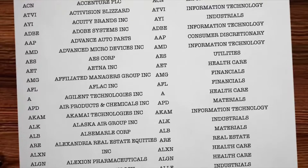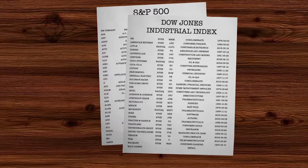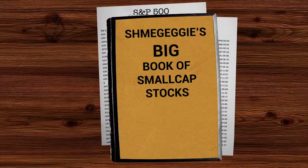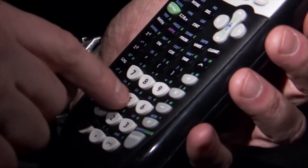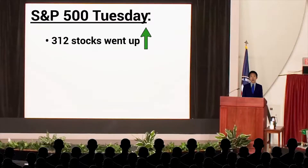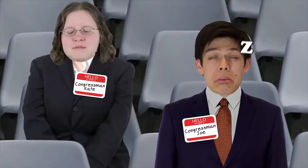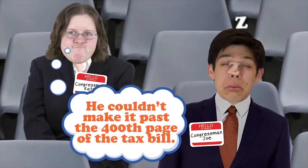Basically it looks at a given index, like the 500 stocks of the cleverly named S&P 500, or the 30 stocks of the Dow, or the 1,200-ish stocks of the Schmageggy Small Cap Index. It then just adds up which stocks went up that day. Like, last Tuesday 312 stocks in the S&P 500 went up, and 185 stocks went down, and the rest just sat there not moving — like a congressman. Our finest. Best and brightest.